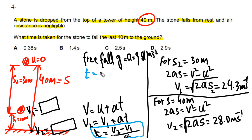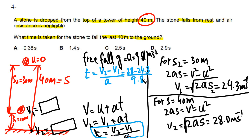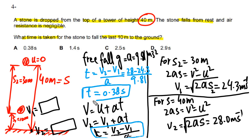Time t = (v2 − v1) / a = (28.0 − 24.3) / 9.81. Solving this gives t = 0.38 seconds. This is the time taken for the stone to fall the last 10 meters to the ground. So our answer is B.